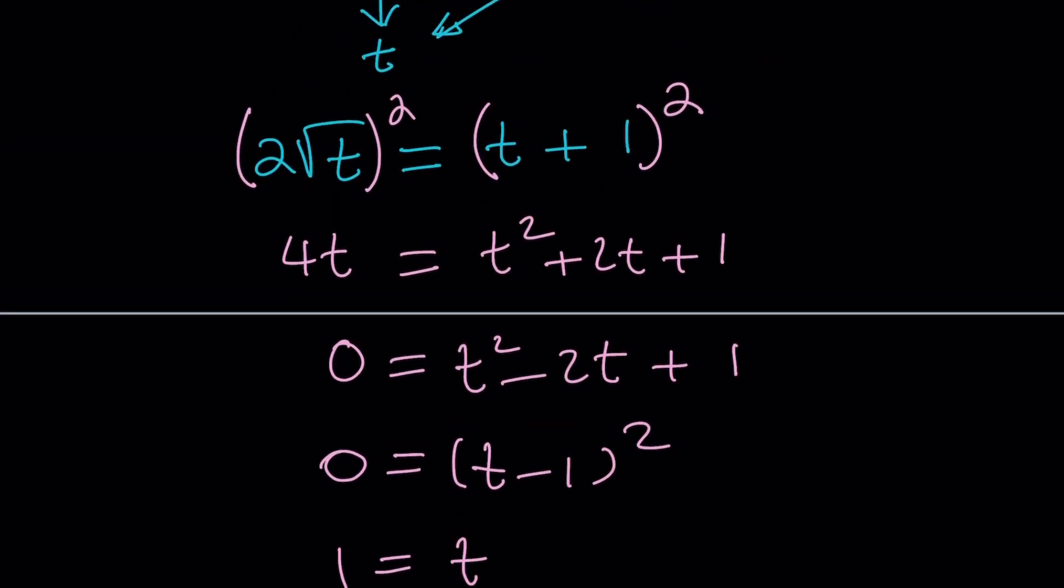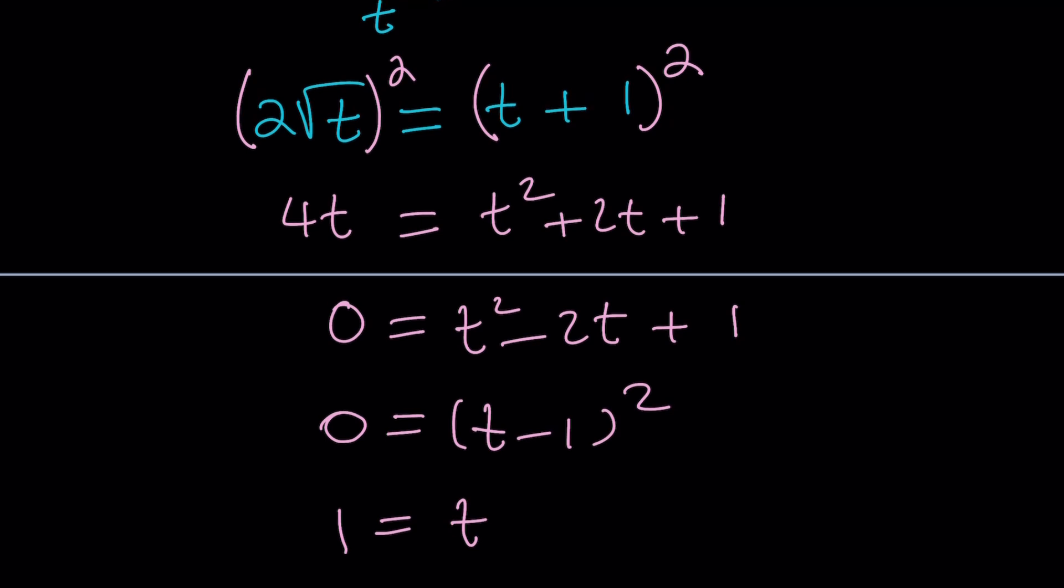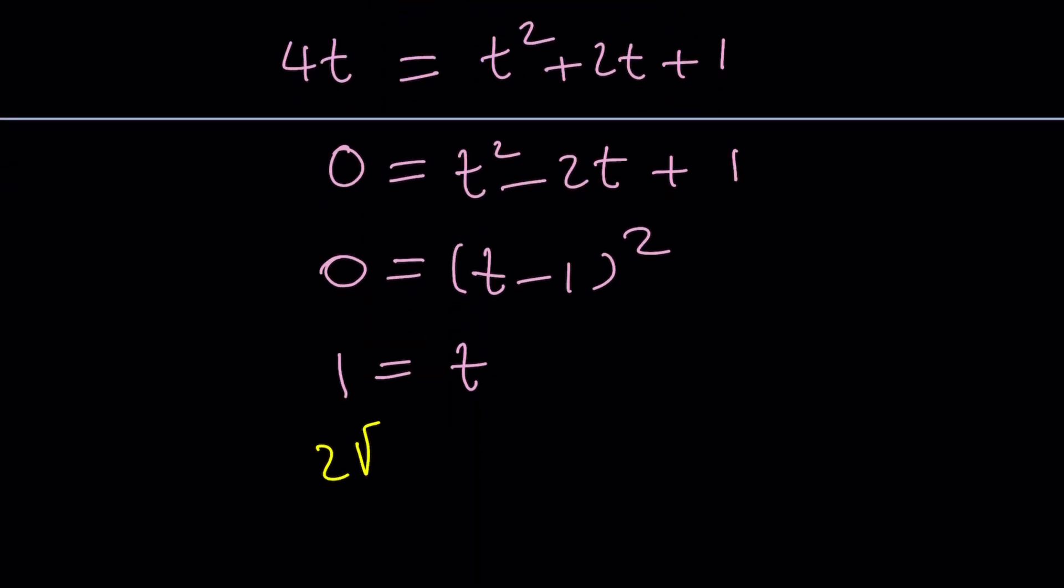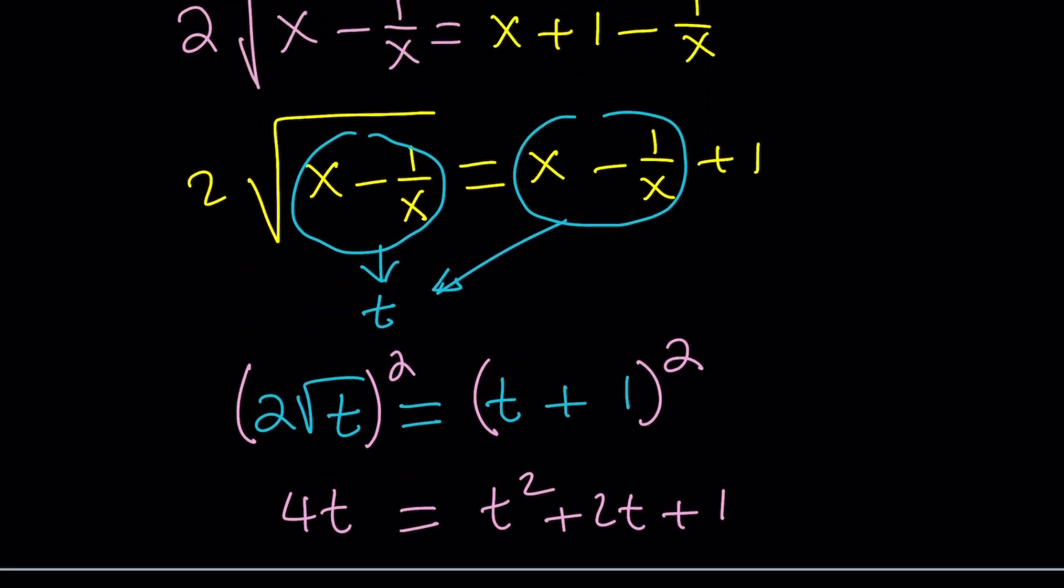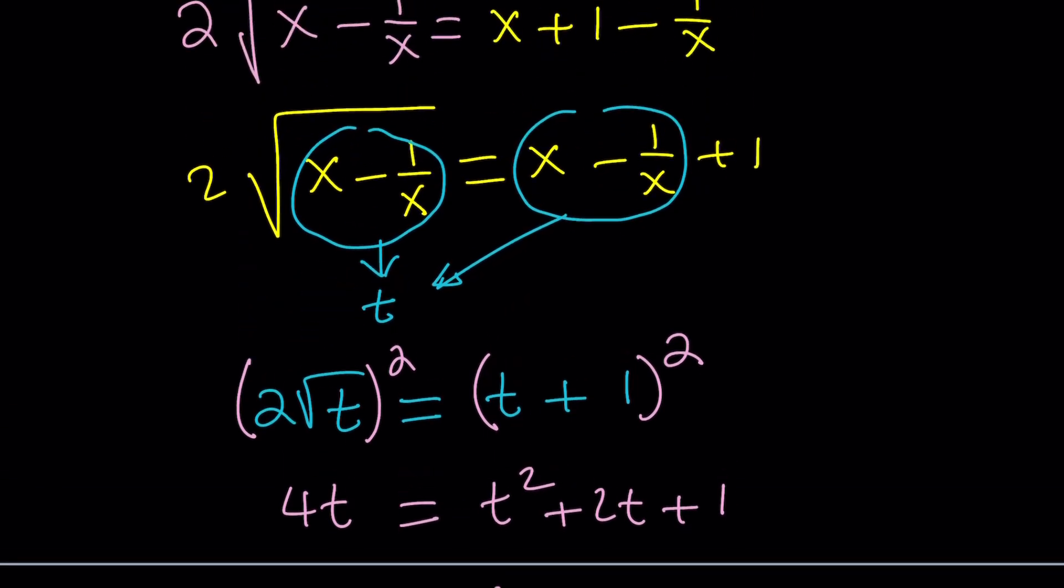Makes sense? So, since that's the only value I'm hoping that's going to satisfy the radical. Otherwise, we end up with no solution. Let's go ahead and check with the original one. 2 root t equals t plus 1. If t is 1 we get 2 equals 2 which is good. Awesome. So, t equals 1 is valid and that's the only solution. But what is t? t is x minus 1 over x.